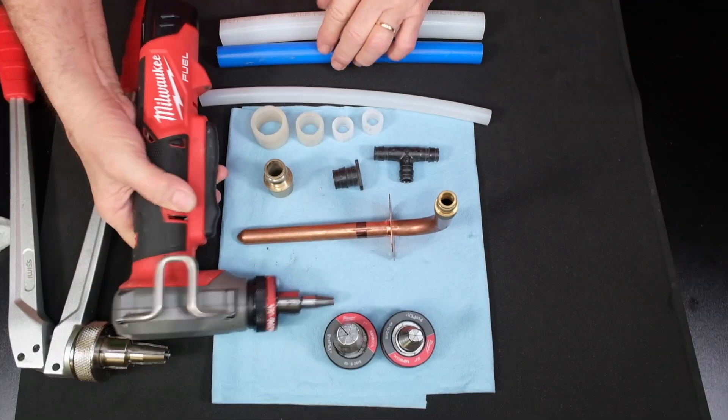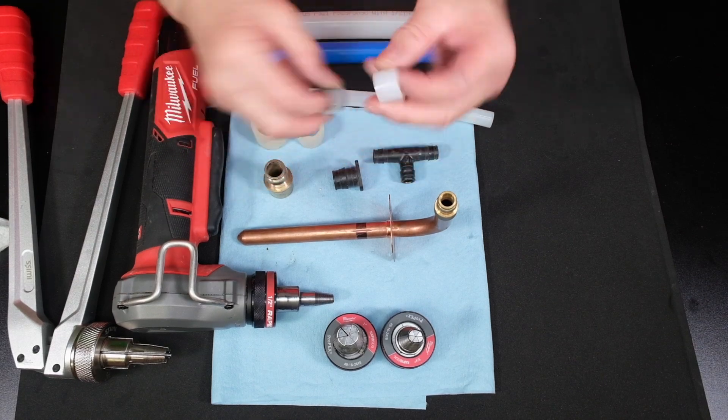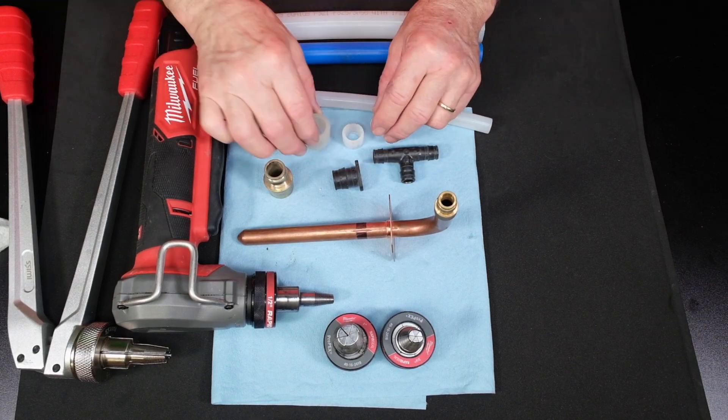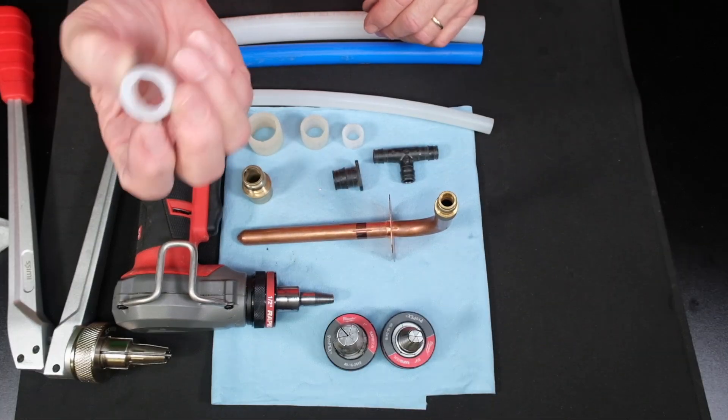Now, how do we do this? Well, it is an expandable pipe, but we have to have our expandable rings. We have half inch, three-quarter, one inch. We're going to be doing half inch fittings today, so we're going to be using a half inch ring.